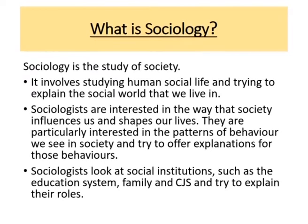In order to develop these explanations, sociologists look at different social institutions that exist in society, such as the education system, the unit of the family, and the criminal justice system. We try to explain what their roles are and how these different institutions affect our behaviour.